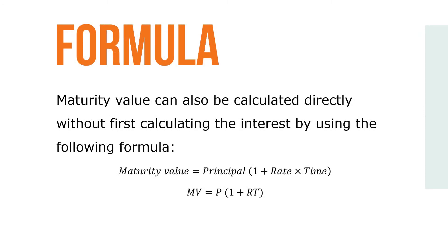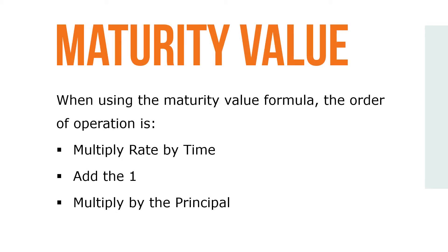Maturity value can also be calculated directly without first calculating the interest by using the following formula: Maturity value equals principal times 1 plus rate times time, or MV equals P times (1 plus RT). When using this formula, the order of operations is: multiply the rate by time, add the 1, and multiply by the principal.